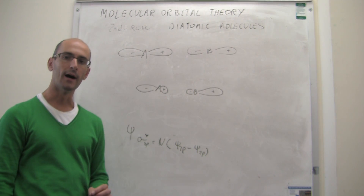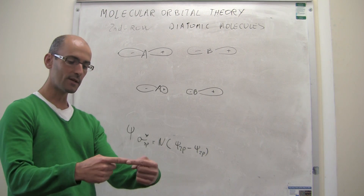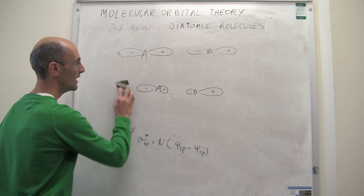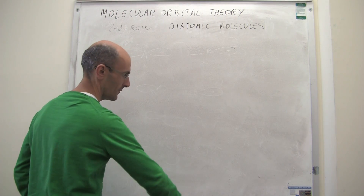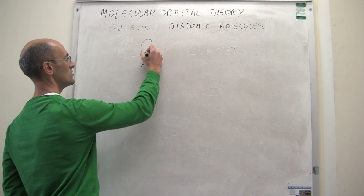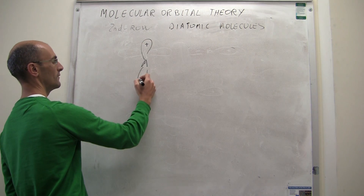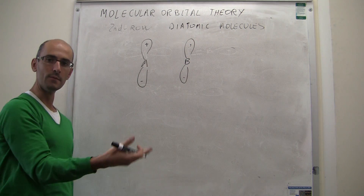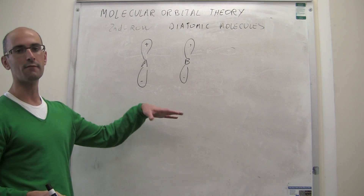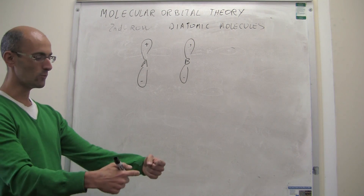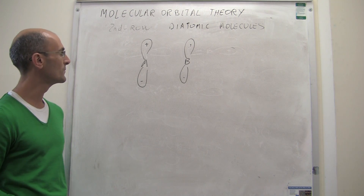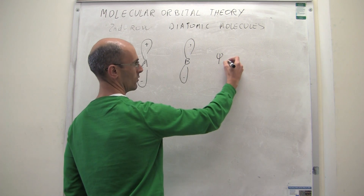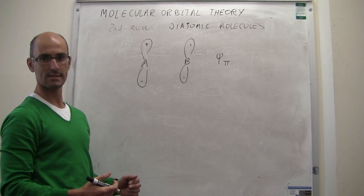This is not the only way p orbitals can interact. We have seen a head-on mixing; there can also be a side-on mixing. Instead of the 2px orbital, we pick the 2py orbital — one that is perpendicular. The question is whether these two wave functions can mix to generate a bonding and an antibonding molecular orbital in the same way. These orbitals are going to be called pi orbitals because the interaction is side-on, as opposed to head-on.